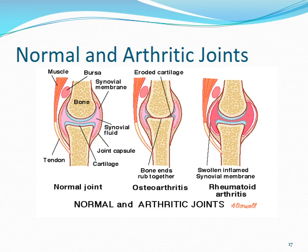Looking at an OA joint: a normal joint has normal synovial fluid with bone and cartilage not in contact. Over time with osteoarthritis, the synovial lining wears down and bone-on-bone contact occurs. This is the source of much of the pain and disability.